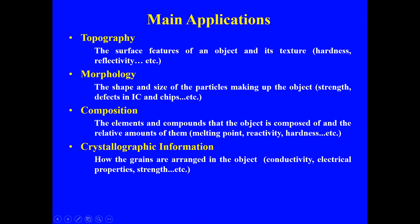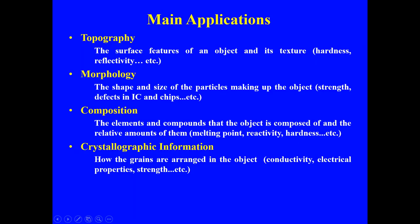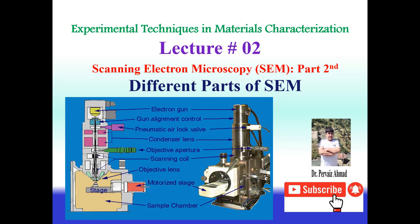Crystallographic information is another output of the SEM. You can find out how the grains are arranged in the object and what the lattice parameters look like. In addition, you can determine electrical conductivity, mechanical strength, and other properties from the crystallographic information. That covers the introduction to the SEM.